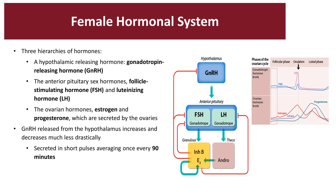The female hormone system, like the male hormone system, consists of three tiers of hormones. The first is the hypothalamic releasing hormone called gonadotropin-releasing hormone, abbreviated as GnRH. The anterior pituitary sex hormones are follicle-stimulating hormone, FSH, and luteinizing hormone, LH — both secreted in response to GnRH from the hypothalamus. The ovarian hormones secreted are estrogen and progesterone, which are secreted by the ovaries in response to the two pituitary hormones.